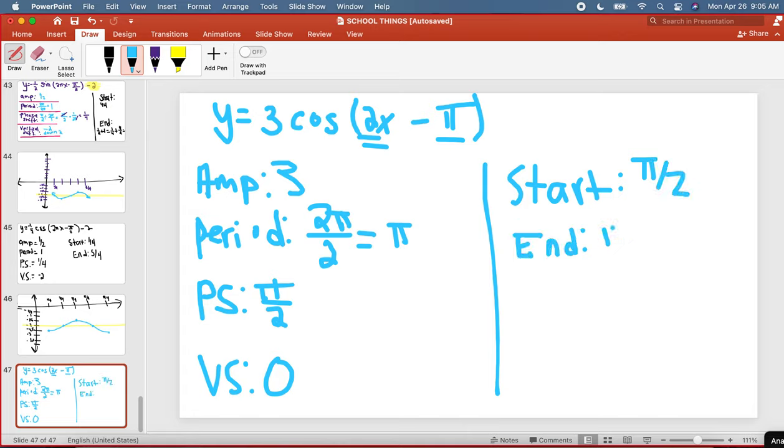If this was a sine graph, I would have started on the midline. I would have gone high. I would have gone back to the midline. I would have gone to a minimum. And then I would have gone back to the midline. So I would have gone up, down, and back up.